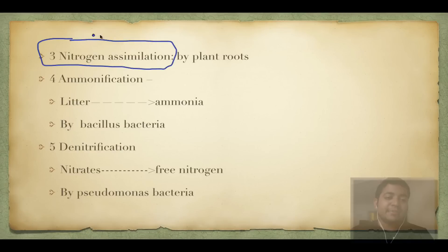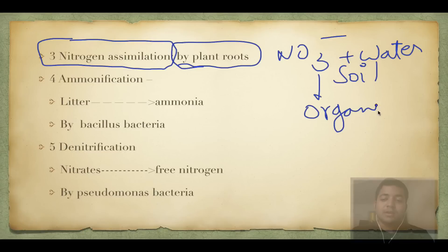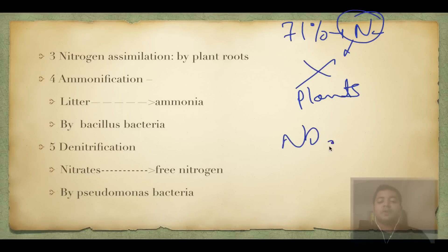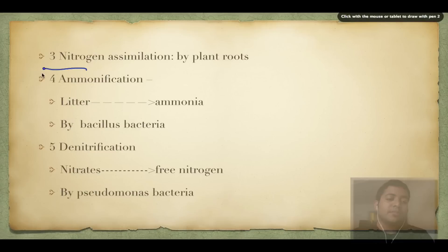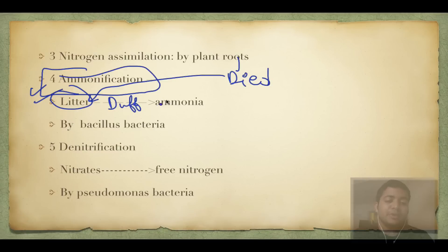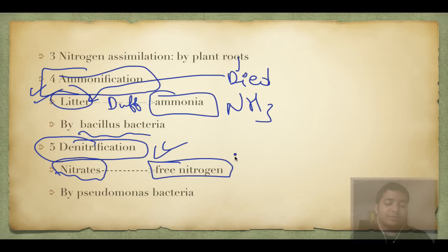The third step is nitrogen assimilation, done by plant roots. Since nitrogen is present in nitrate form, it is absorbed along with water from the soil and converted into organic matter by plants. Why do we need the nitrogen cycle? Because 71% of our atmosphere is nitrogen, but plants can only absorb it in nitrate form. The fourth step is ammonification - when organic matter or organisms die, litter is converted into duff, then into humus and ammonia, done by Bacillus. Finally, denitrification is the removal of nitrogen from ammonia; nitrates are converted into free nitrogen by Pseudomonas bacteria.